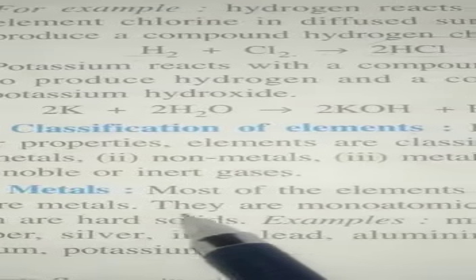Most of the elements known to us are metals. They are monoatomic, meaning single atom. They are made up of single atoms. Most of them are hard solids, though some exceptions are there.